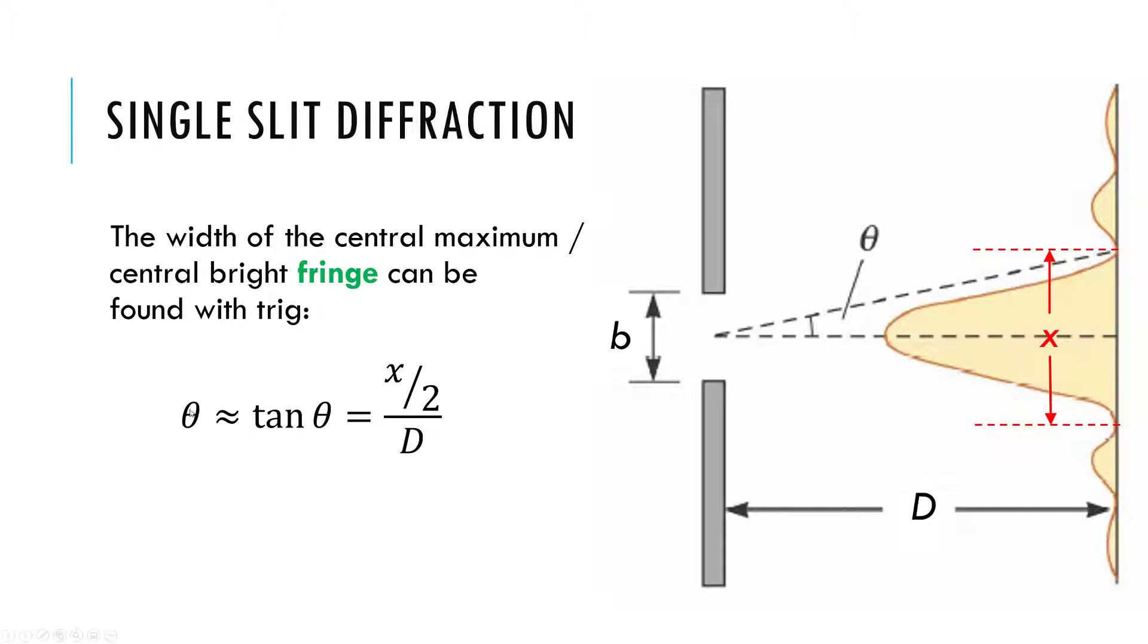Let's do some more small angle approximation. How do you like that? If I take the tangent of this angle, it will be equal to half of the width divided by the distance to the screen. That's SOHCAHTOA, opposite over adjacent.